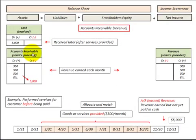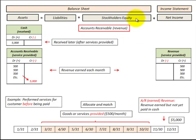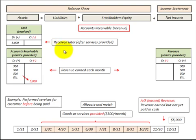To sum it up: we increase accounts receivable when we provide a service in advance of payment, with a corresponding credit to revenue, which is part of net income on the income statement. The revenue account is then closed out to a retained earnings account under stockholders' equity on the balance sheet at the end of the period. Later, when we receive the cash, we reduce accounts receivable and increase the cash account — that's an overview of how accounts receivable works.